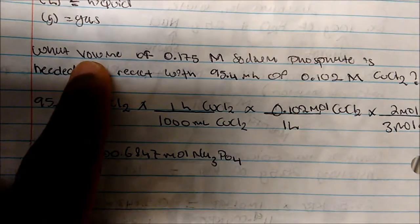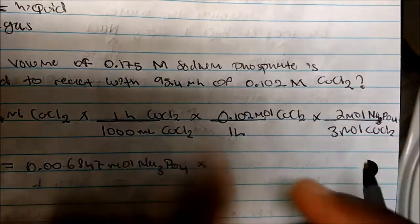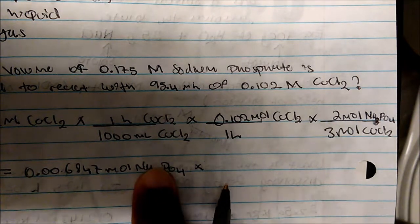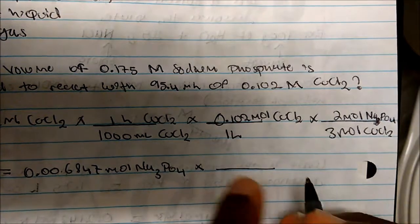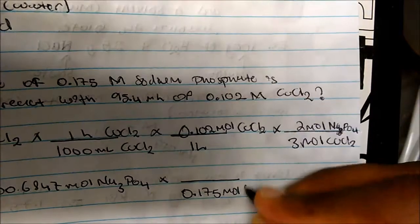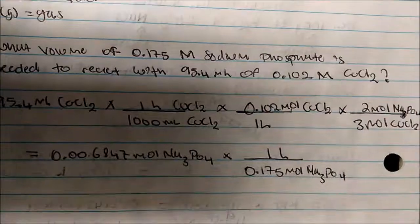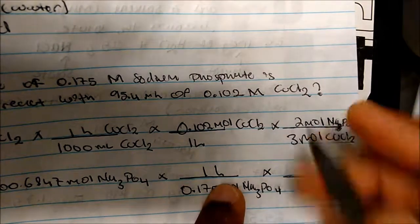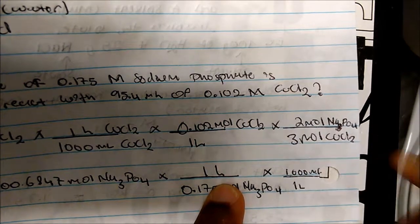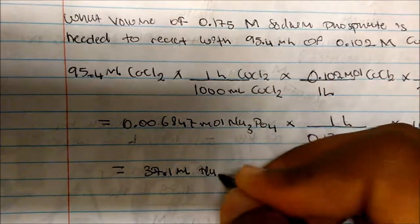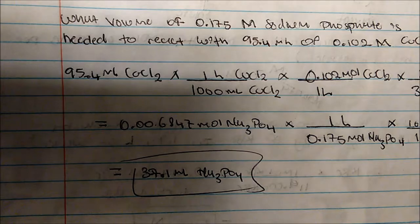Now that we're in moles of sodium phosphate, we need to get to volume. Using the molarity of sodium phosphate as a conversion factor — for every 0.175 moles I get 1 liter — and then converting back to milliliters by multiplying by 1,000, the final answer is approximately 37.1 milliliters of sodium phosphate. That's the process I want you to take away from this.